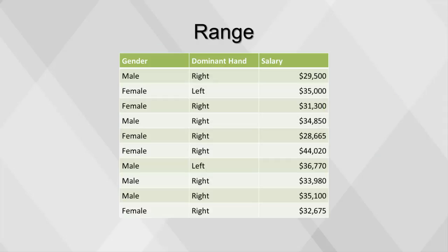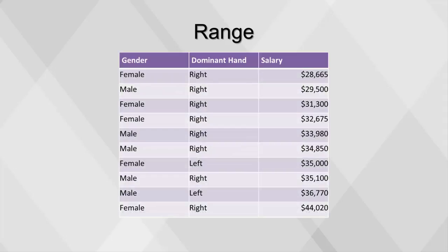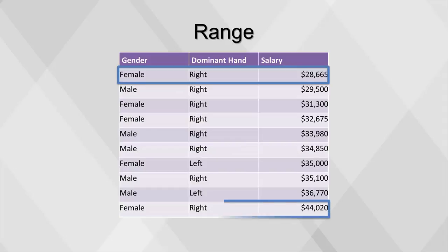The range is the largest number minus the smallest number. To find the range, we first sort from smallest to largest, then subtract the smallest value from the largest value.